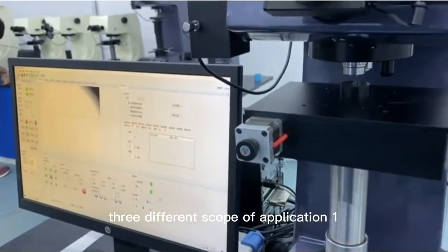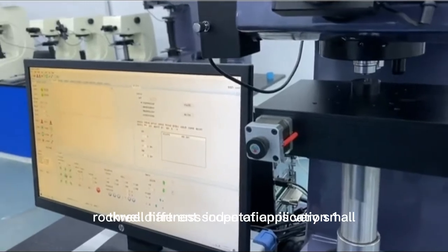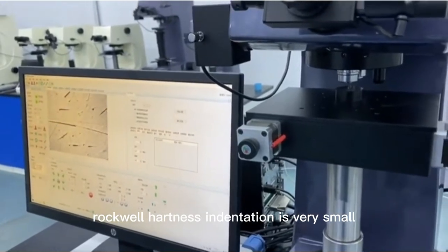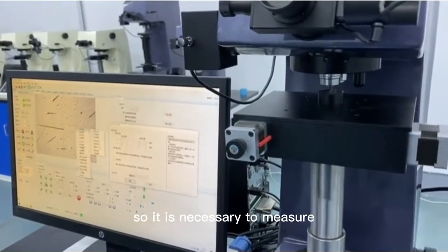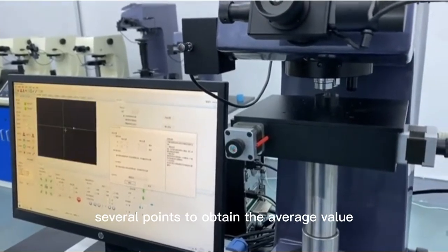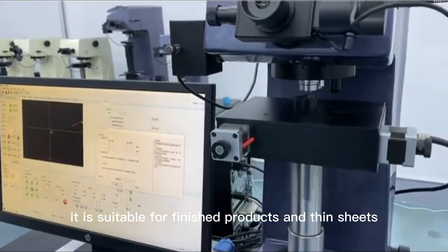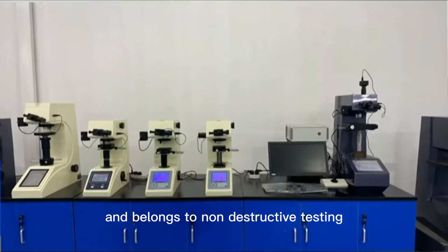Three, different scope of application. Rockwell hardness indentation is very small and the measured value is local, so it is necessary to measure several points to obtain the average value. It is suitable for finished products and thin sheets and belongs to non-destructive testing.